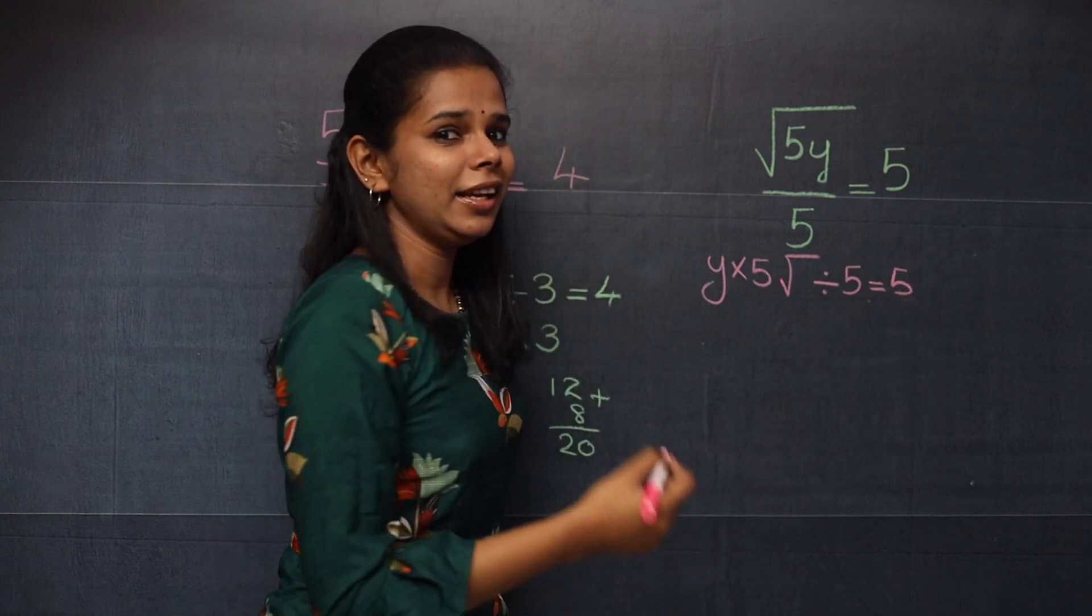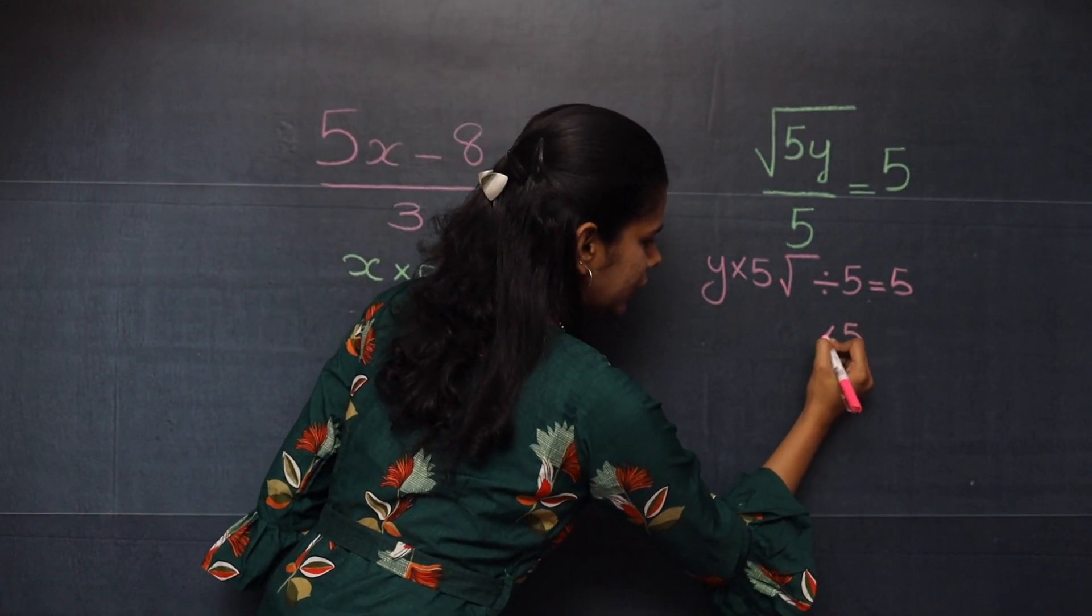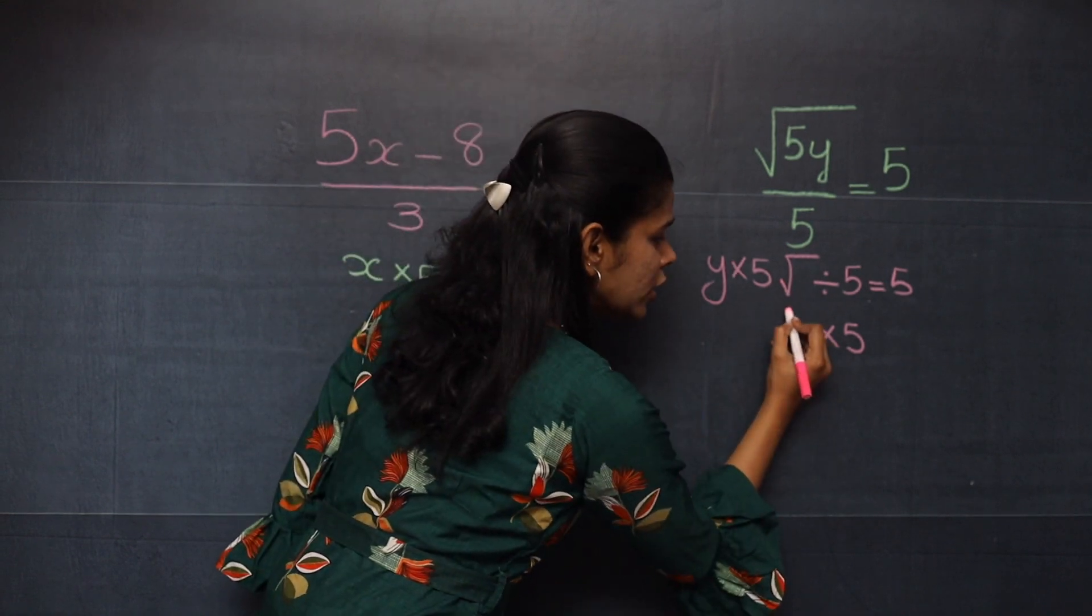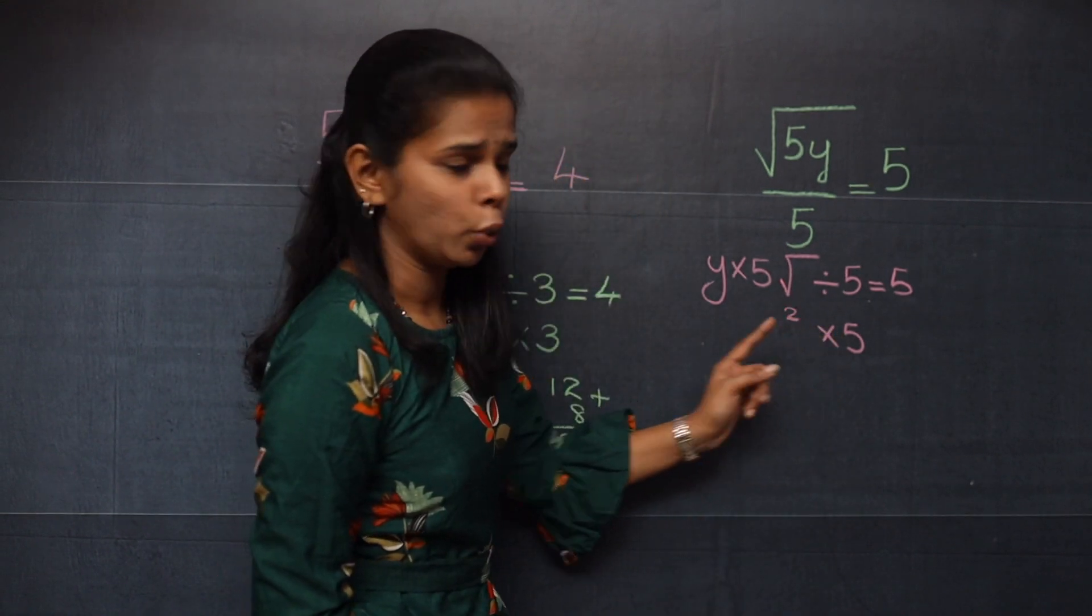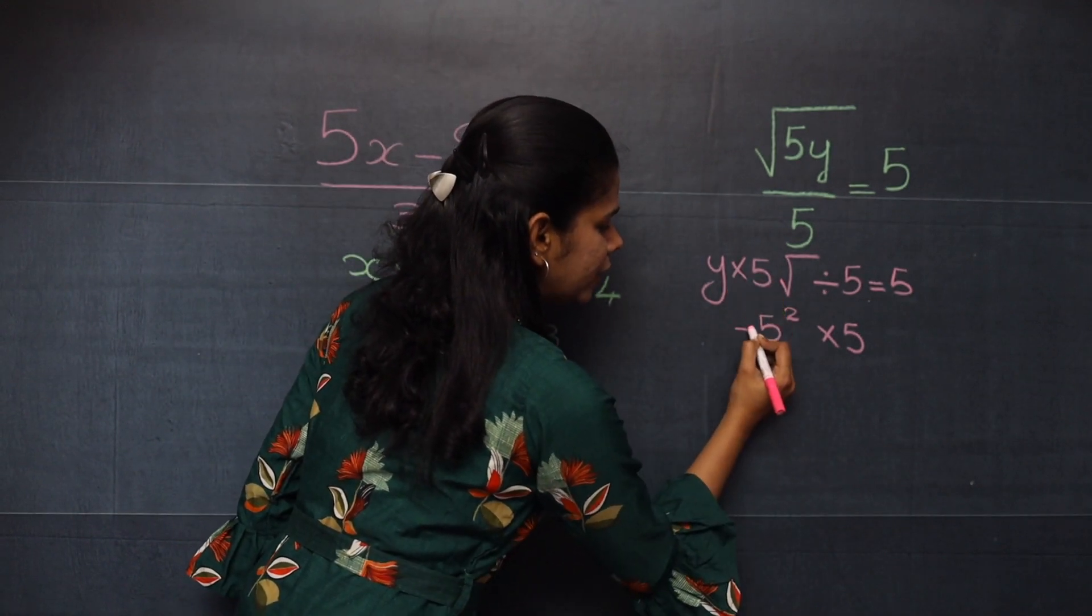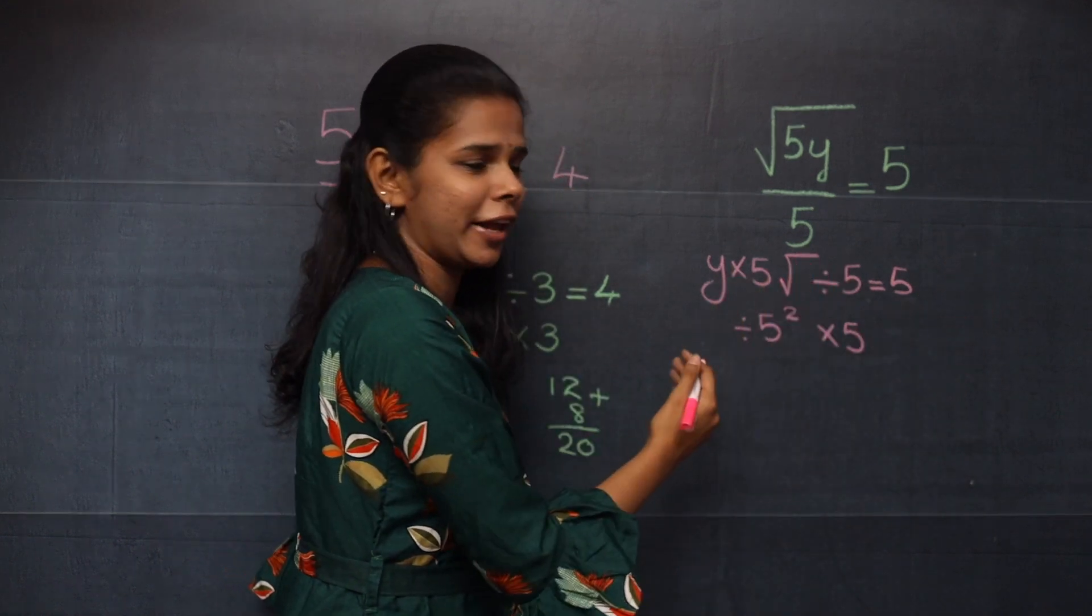Now you will take the inverse operation. So here 5, and then with this multiplication. The inverse operation of square root is square. So I am going to write it as a power 2. And then you have 5, and then division. Now starting from right to left.